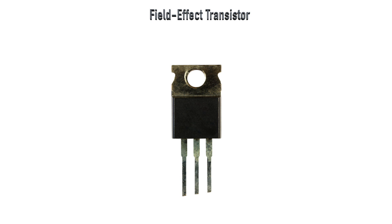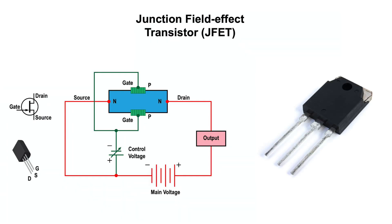The field-effect transistor, or FET, is a voltage-controlled device that uses basically no input current. Instead, output current flow is controlled by a varying electric field, which is created through the application of a voltage. The junction field-effect transistor shown here is constructed with a bar of N-type material and a gate of P-type material. Because the material in the channel is N-type, the device is called an N-channel JFET.